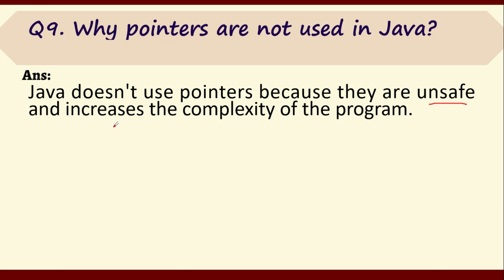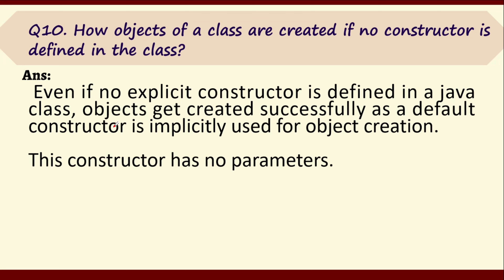Question number ten: how are objects of a class created if no constructor is defined? If you have not declared any constructor in your class, objects can still be created because Java automatically adds one implicit constructor. That implicit constructor will not have any parameters. So even if your class has no constructor written explicitly, by default there will be one implicit constructor added by Java.